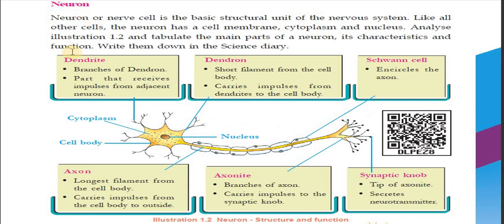The first part is the dendrite. The dendrite is the branch of the dendron. So the dendrite is the branch-like structure of the dendron. This dendrite part receives impulses from adjacent neurons.